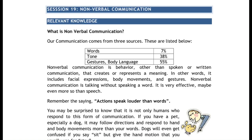Non-verbal communication is part of how we communicate. Our communication comes from three sources. The first source is only 7% — that is the actual words we say. The tone of our voice is 38%. Tone includes how sometimes we speak very loud, sometimes very slow, sometimes normal — that communication through tone is 38%. And the next is gesture and body language, which accounts for 55%. These are the three sources through which we communicate.